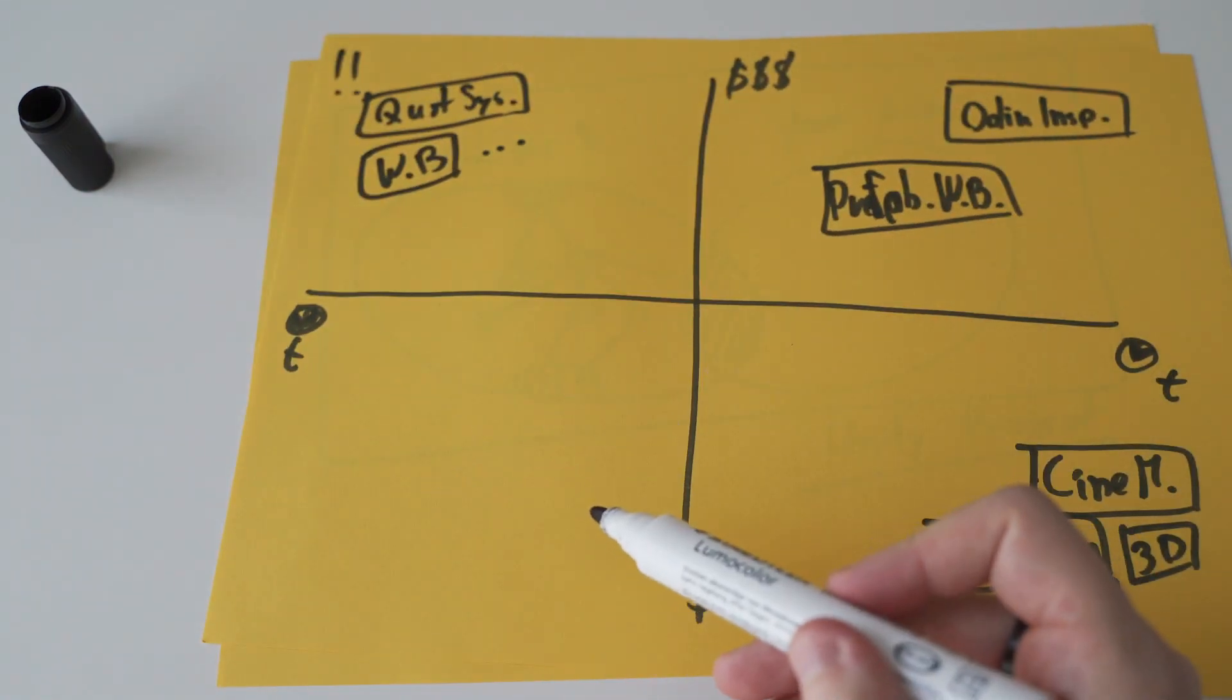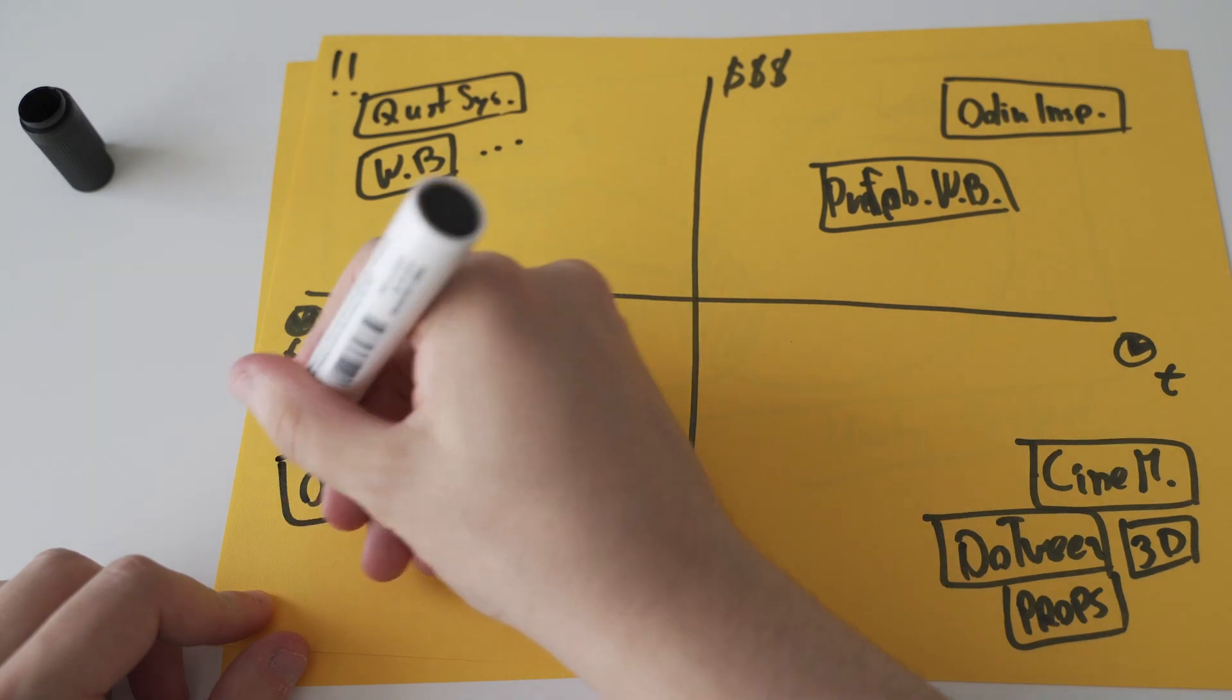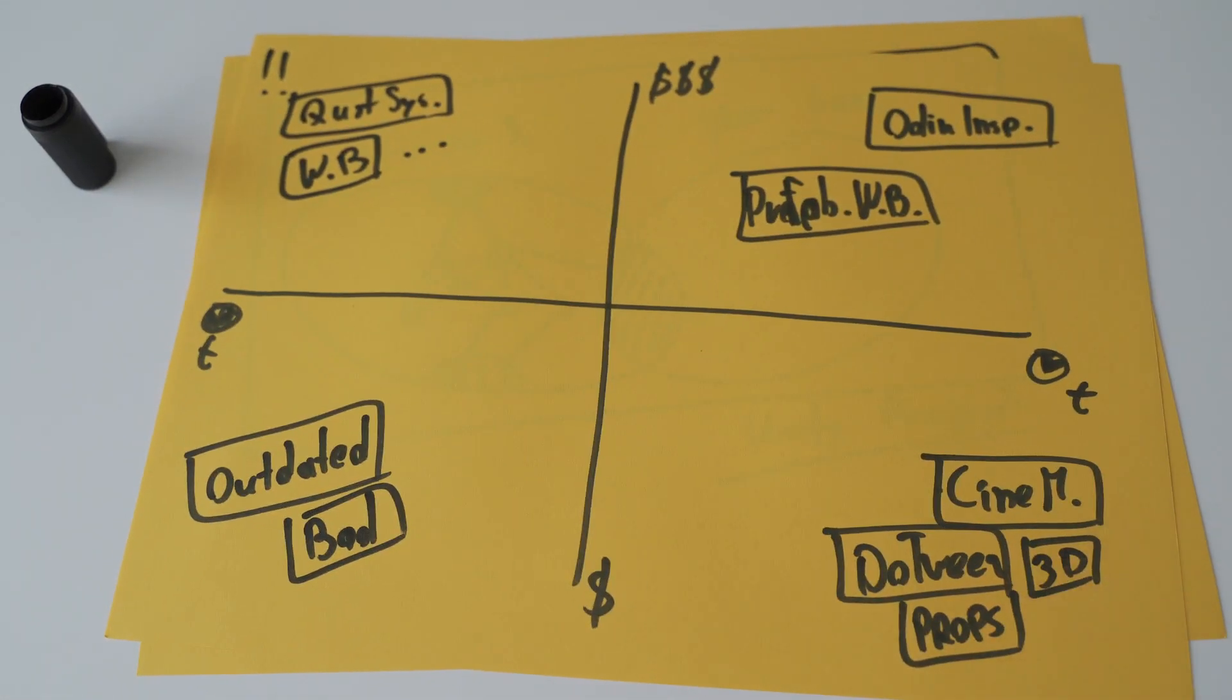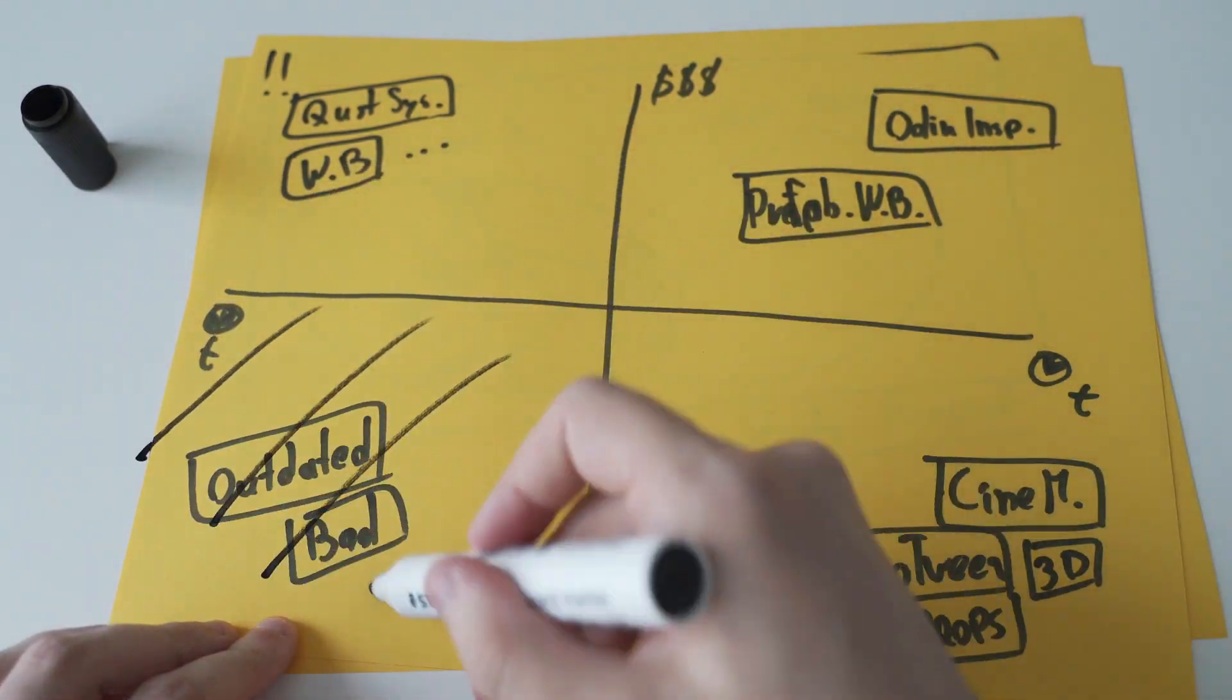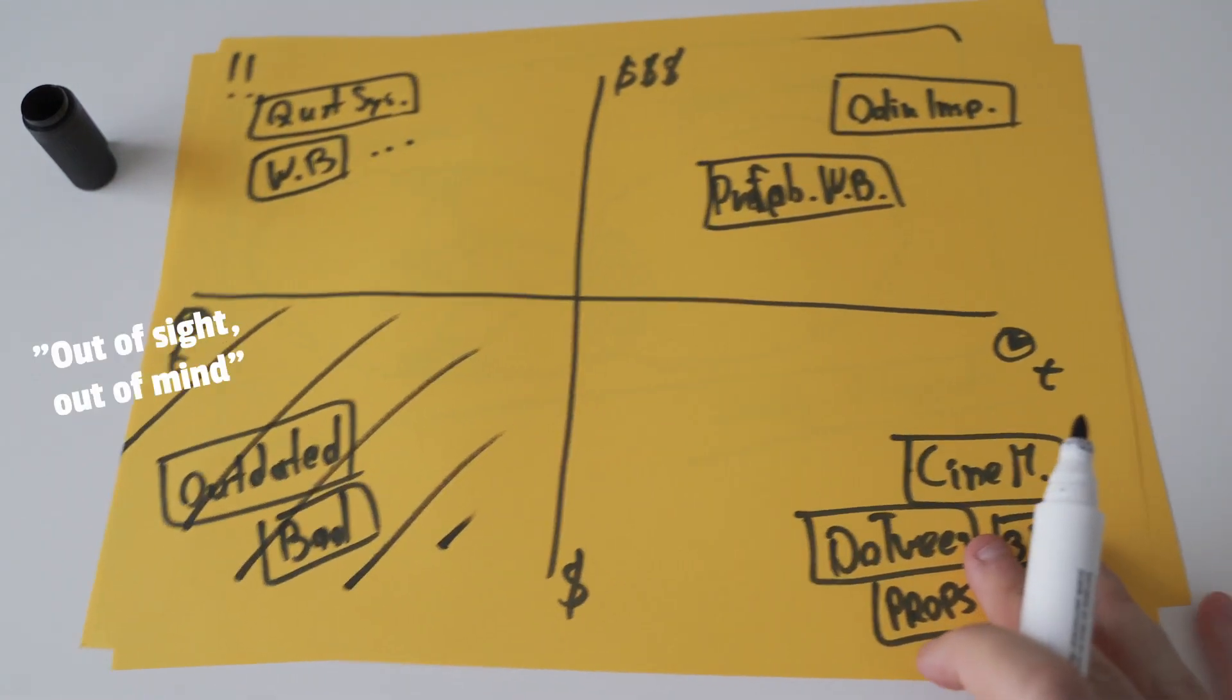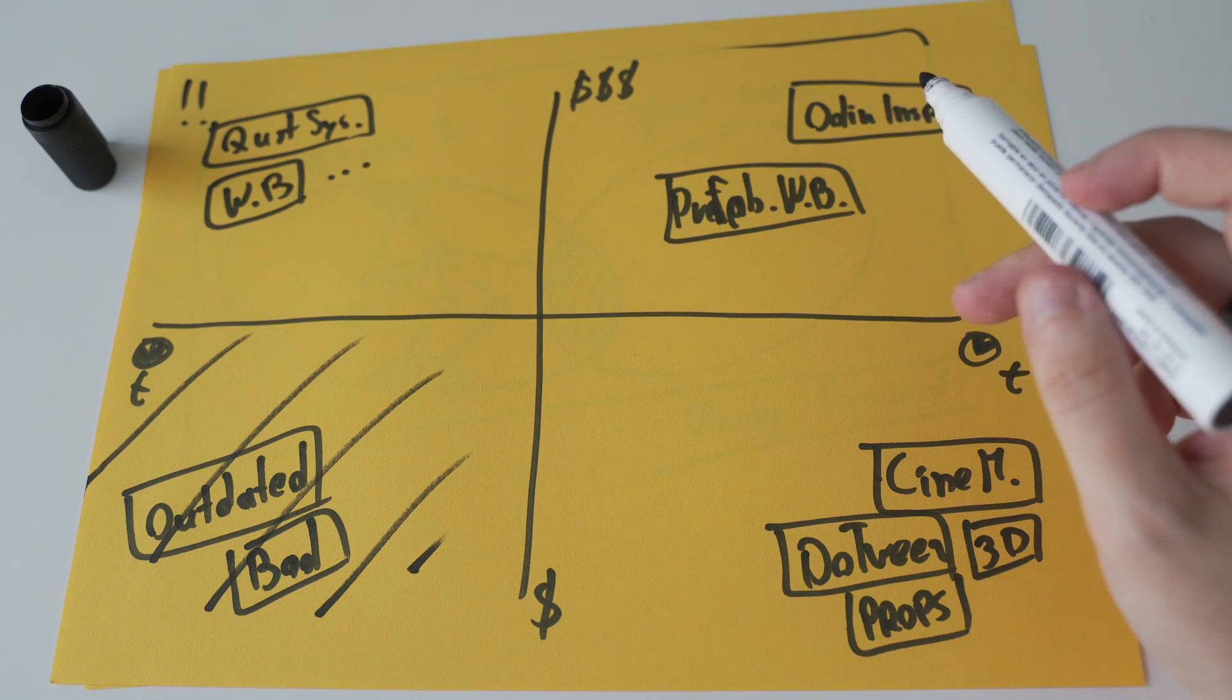And finally down there, you will have a lot of cheap assets that will waste your time. Those are often simply outdated or already of poor quality. Obviously, this area is to be avoided. If an asset falls into here, you might be better off finding an alternative or building a simpler version yourself. All the top parts are most of the time quite large packages and so you will need to invest some time to learn to use them.